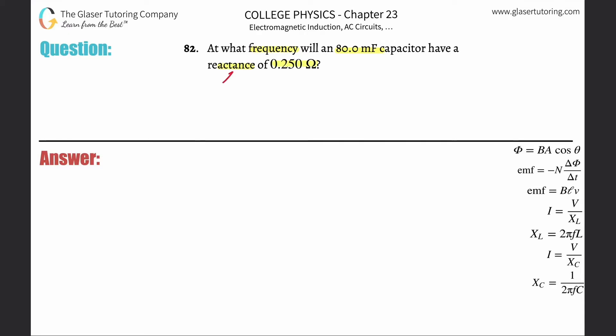When they're talking about a capacitor and reactance, they're giving us what's known as the capacitive reactance. Reactance is a variable X_C, with the subscript C for capacitance.